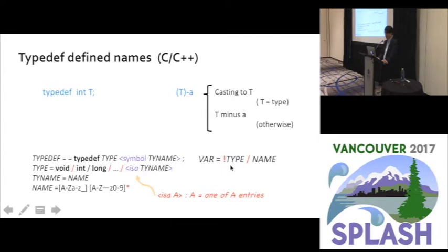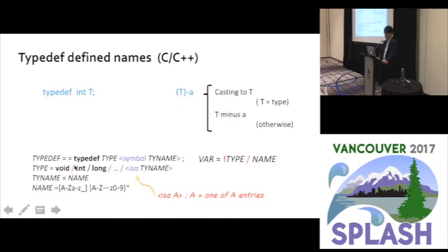Typedef names are a classic and famous parsing problem. In C or C++, an identifier needs to be parsed differently depending on whether it is a type or not — in the type case it is a cast to T, and in the non-type case it is T minus A. These typedefs redefine the type namespace. Here is the SPEG version of this grammar, where instead of 'match type name' we use 'is a type name', which means matching one of the entries on the symbol table.